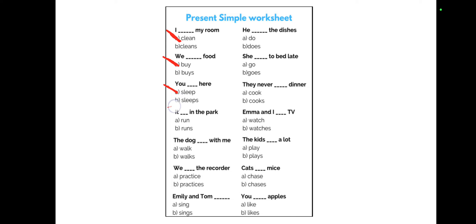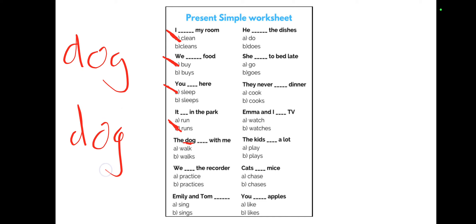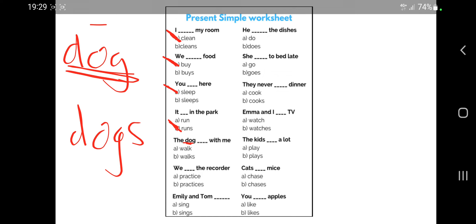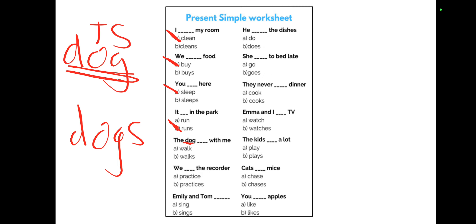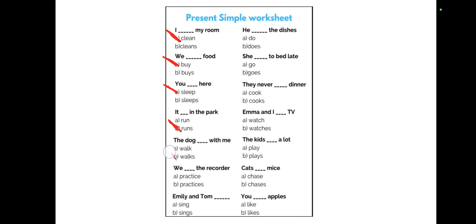Next, the word 'it' — 'it' is singular, like he, she, it, so we have to add 's' at the back. The answer is 'b — it runs in the park.' Next, 'dog' — dog is singular, meaning there's only one dog. If it were plural it would be 'dogs.' Since it's singular we add 's,' so the answer is 'walks' — the dog walks with me.